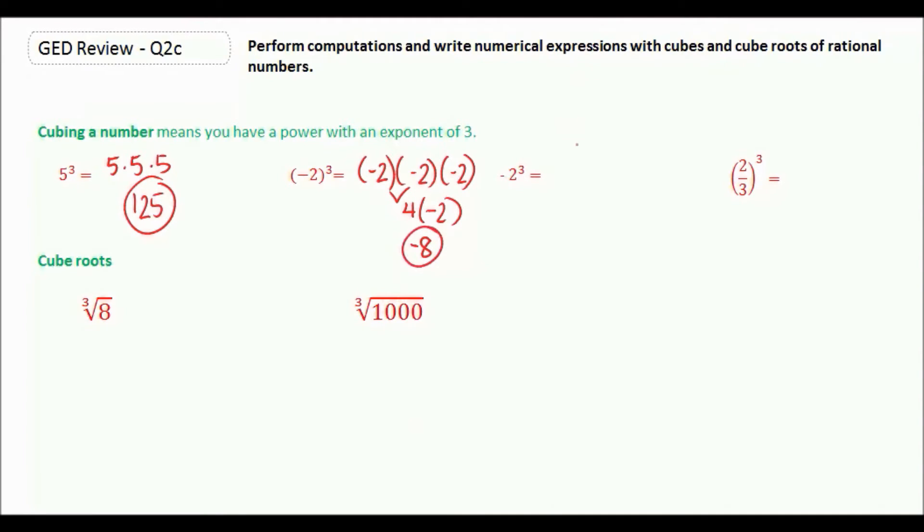Negative 2 cubed would be negative 2 times 2 times 2. This here gives you 8, so it would be negative 8.